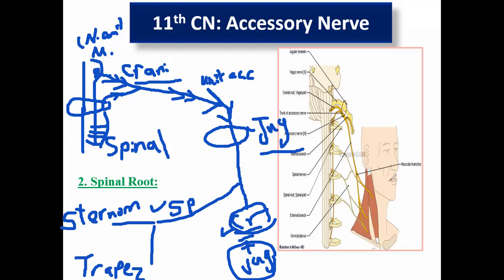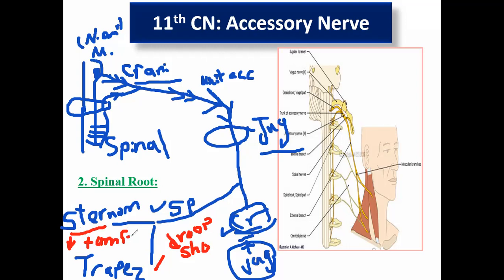Lesion of this nerve: trapezius paralysis and sternomastoid paralysis. Trapezius paralysis causes inability to shrug the shoulder — drooping of the shoulder. Sternomastoid paralysis causes inability to turn the face to the opposite side.